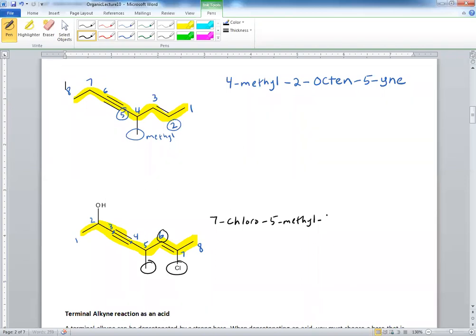Where did the triple bond occur? At the third carbon, so watch how this is different. You say 3-Y-N. You're not done, because this indicates where the triple bond is at. This indicates where the double bond is at. And finally, you have to include the alcohol. 2-O.